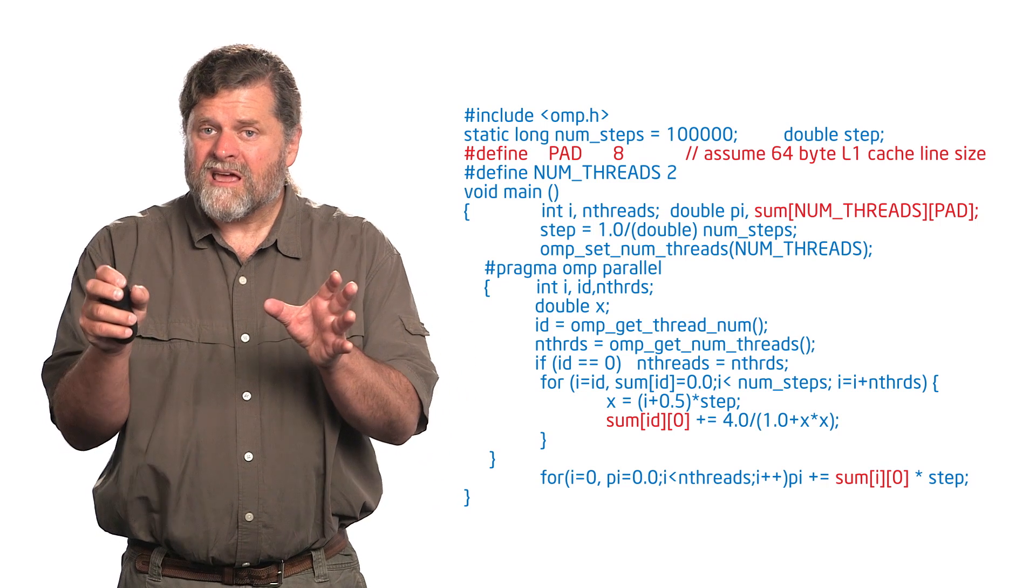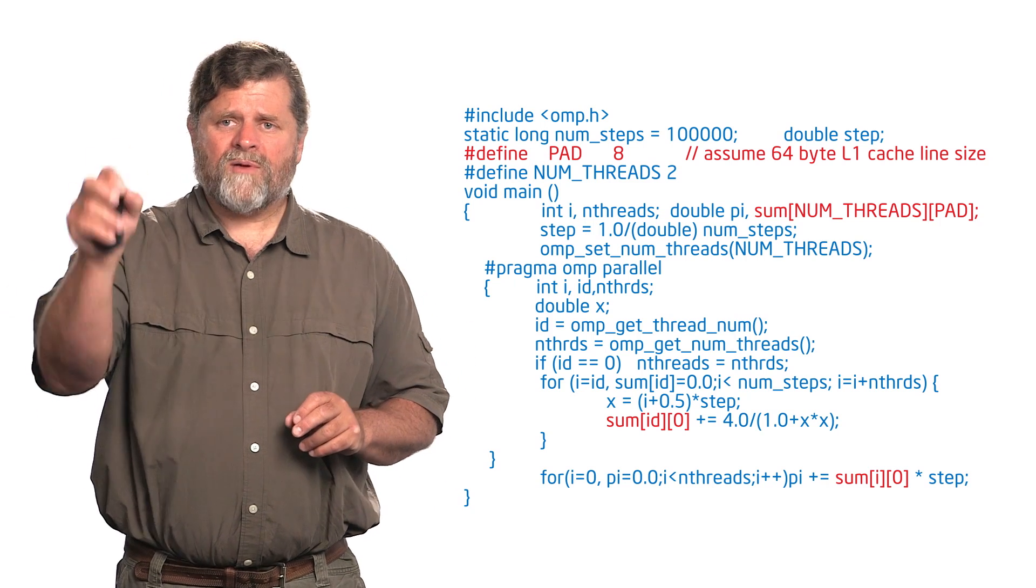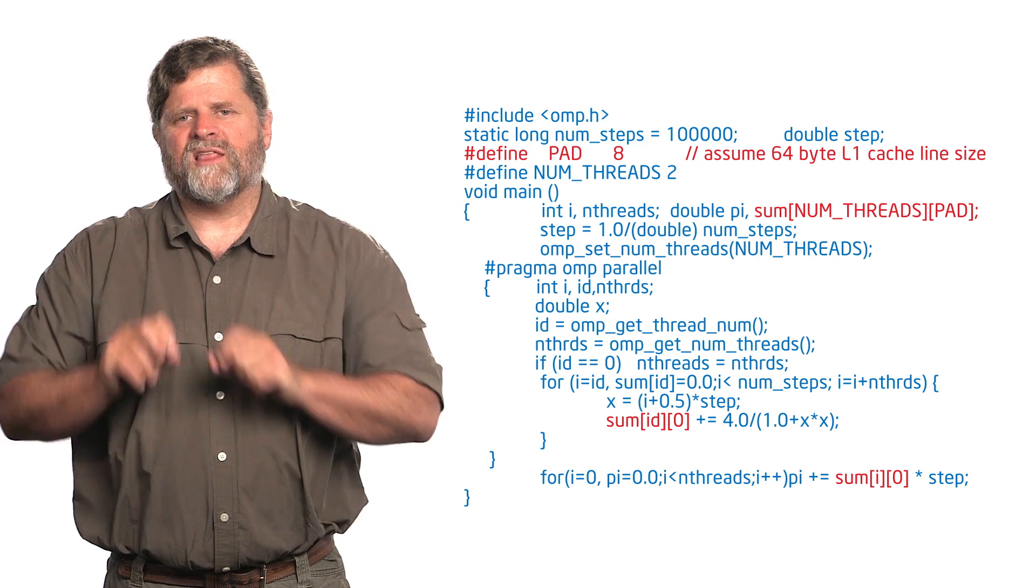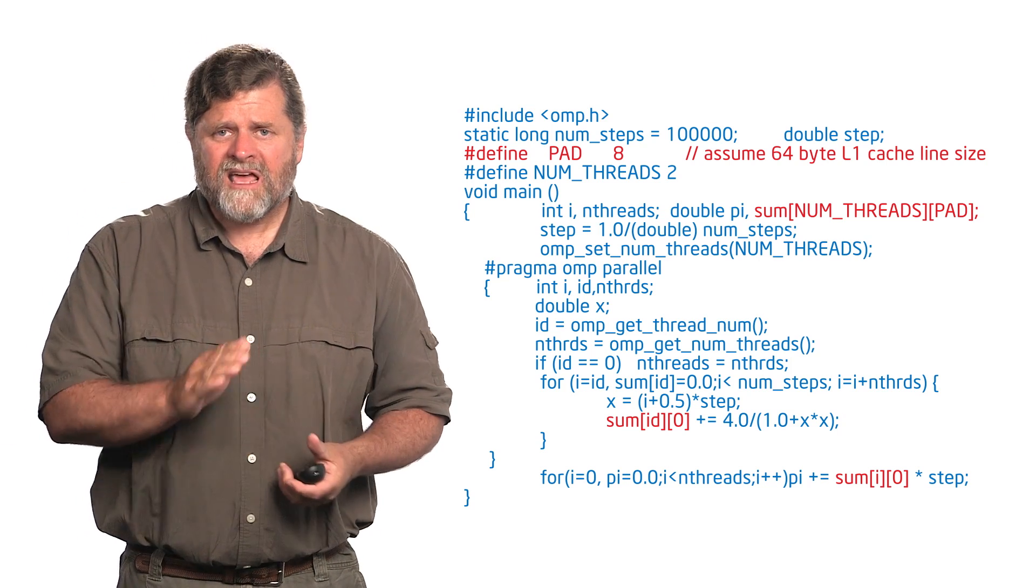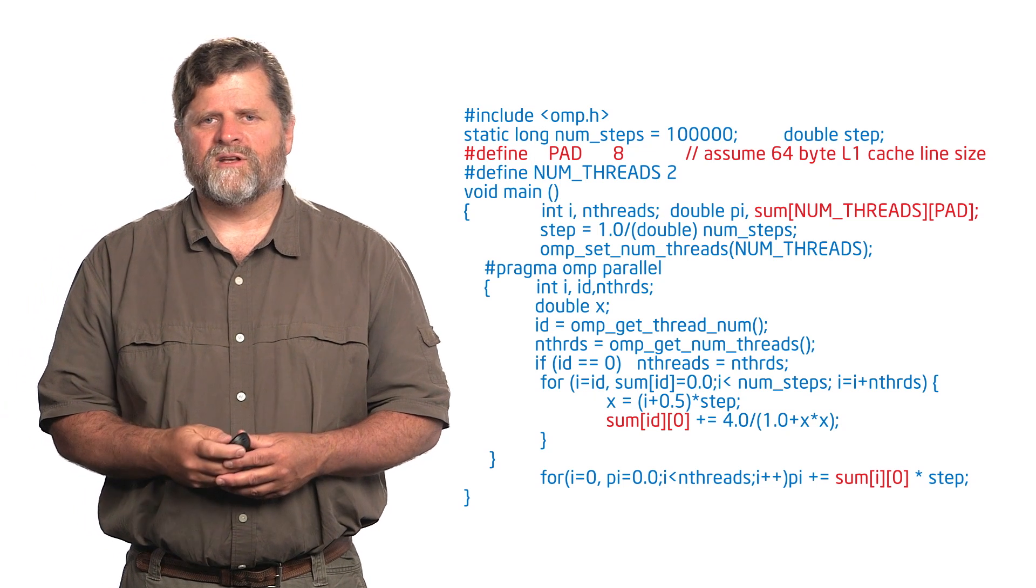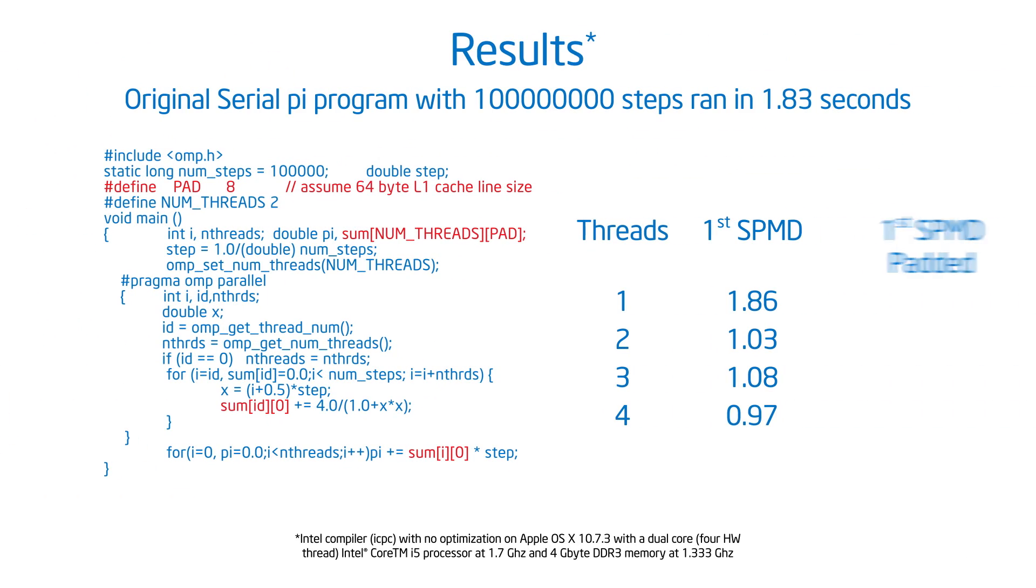So now I guarantee that if I'm always grabbing pad, the second element zero, but the first one's going to be indexed by the ID, I now guarantee that as I go to each successive element in the array, they're sitting on a different cache line. And when I do that, my performance goes from 1.86 to 1.01 to 0.69 to 0.53. So that got around the performance problem of the false sharing.